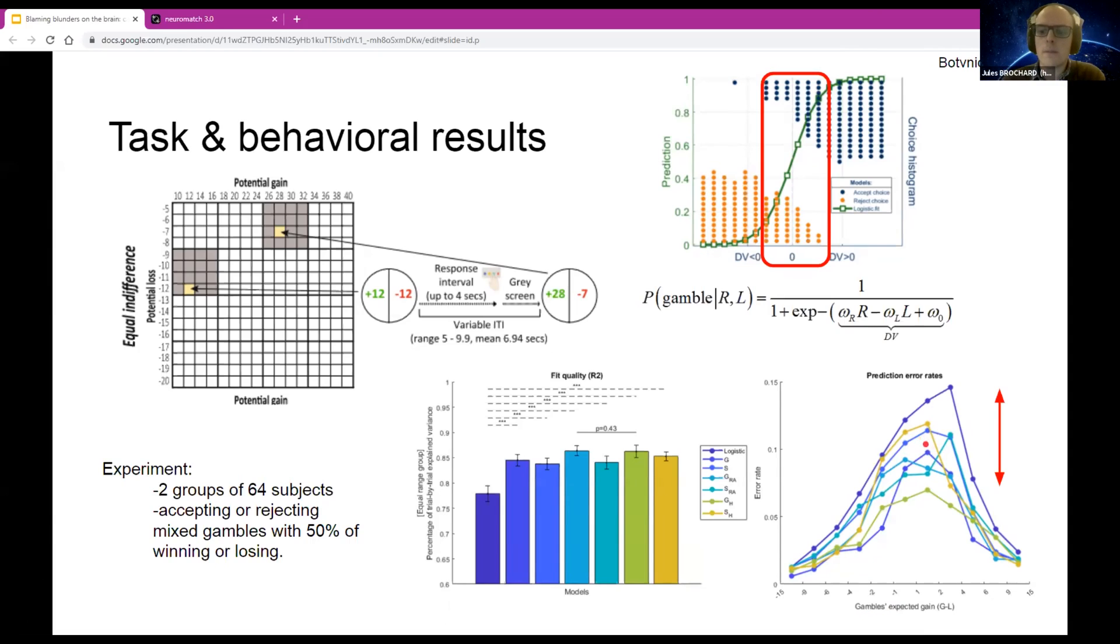But what is striking to me here is that there is a quite significant increase or decrease of this inconsistency as soon as you consider a temporal dynamic and a non-linear dynamic in the decision model.